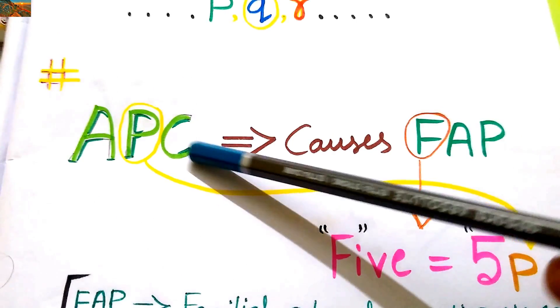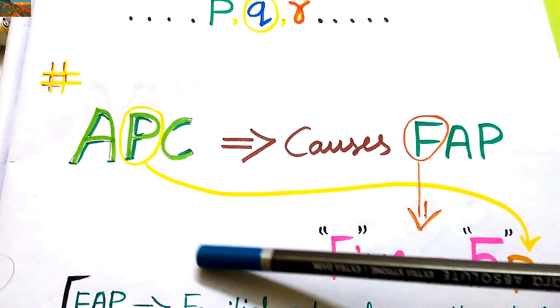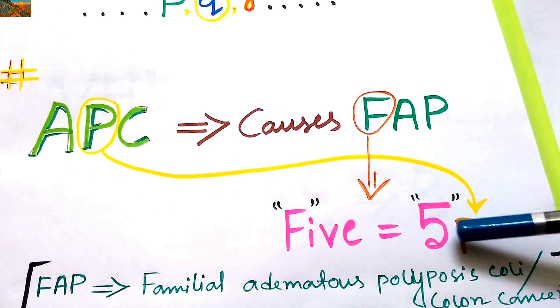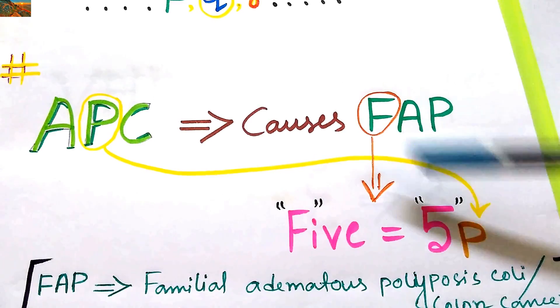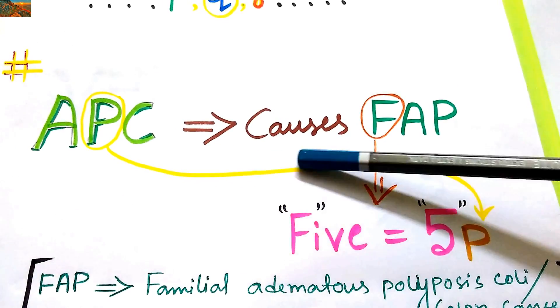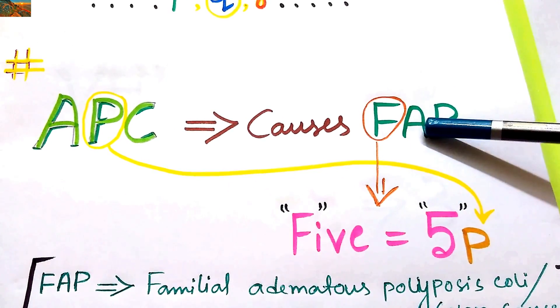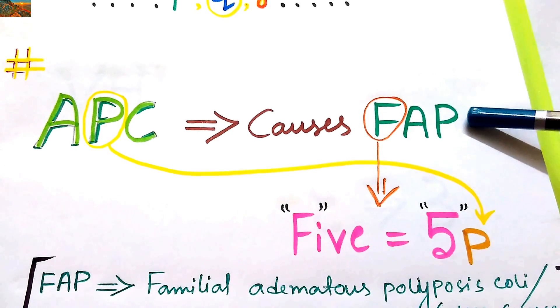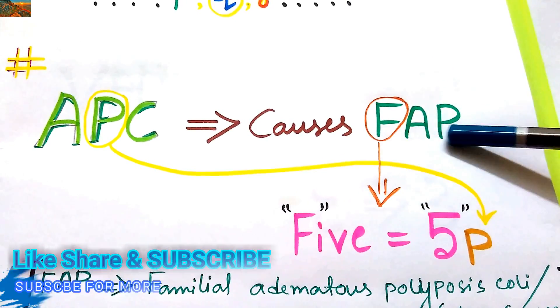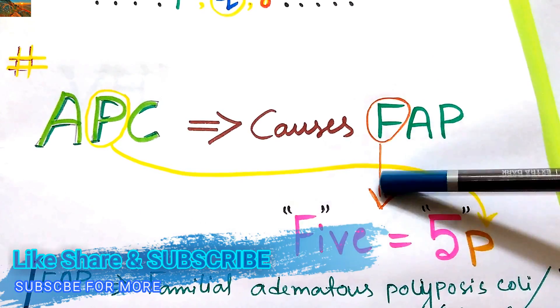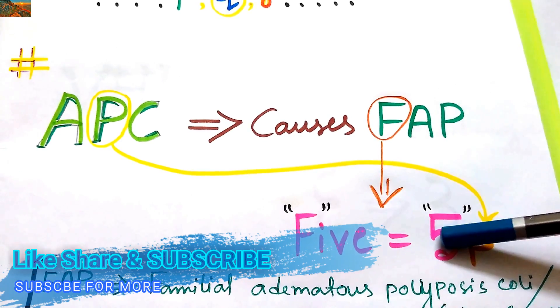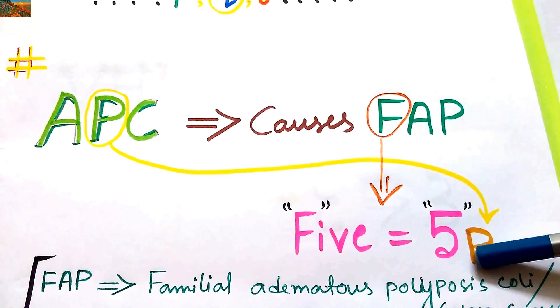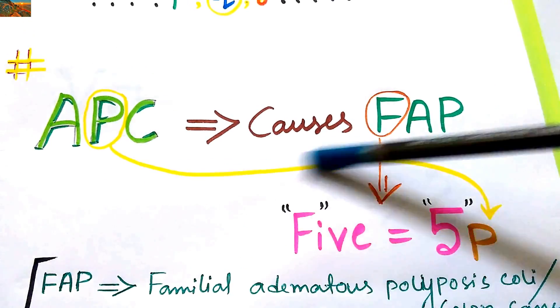Now it is APC gene. How do you remember that APC location is 5P? All of you know that APC causes familial adenomatous polyposis coli or colon cancer. So from FAP we can find, from F we can find 5. So the chromosome number is 5. Now P comes from the APC itself.